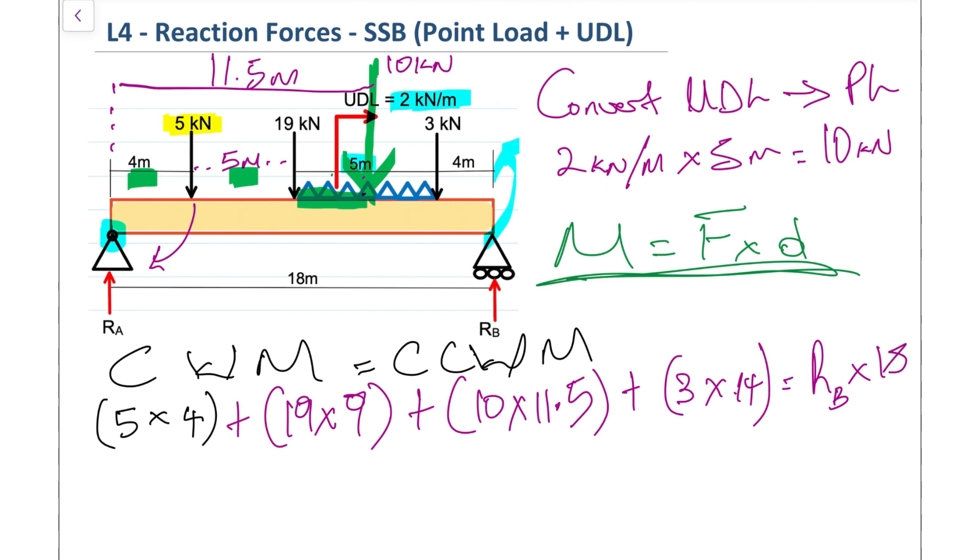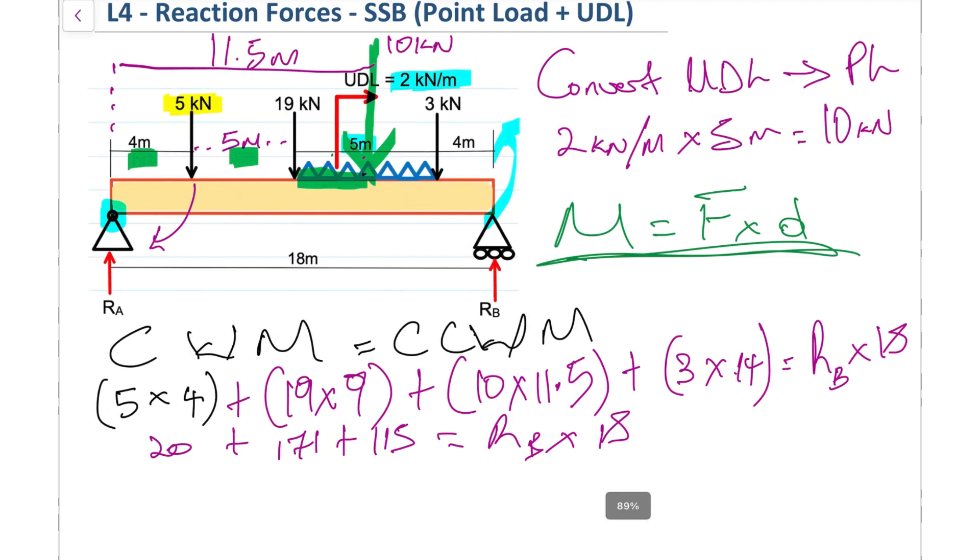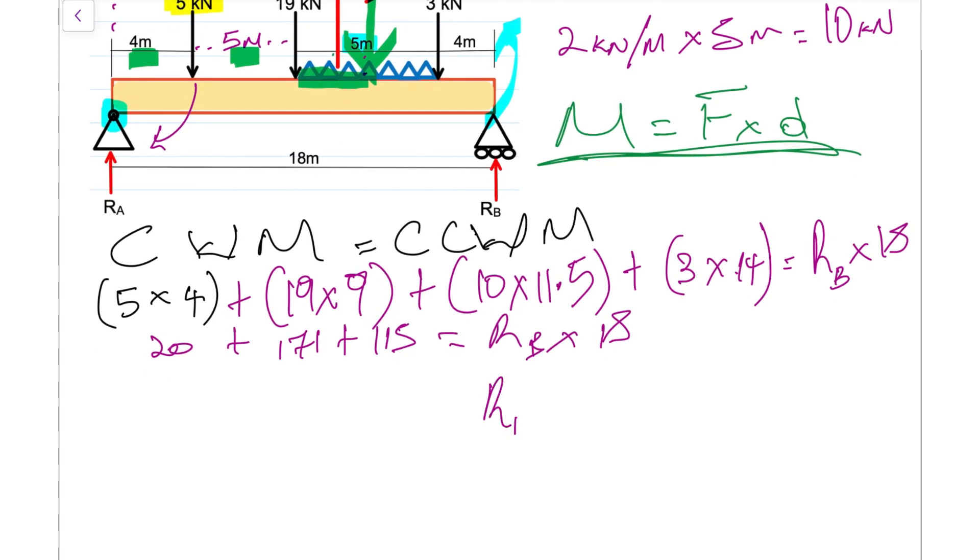We just need to sum all of this up. We have 5 times 4, that's 20; 19 times 9, that's 171; and 10 times 11.5, that's 115. All of that equals RB multiplied by 18. To get our final answer for RB, we sum all of this force up and divide by 18. It's 348 divided by 18, so the final answer for RB is 19.33 kilonewtons. Now we need to find out what RA is.